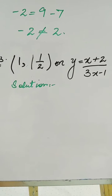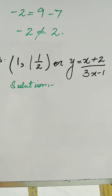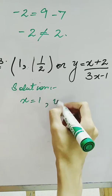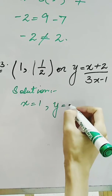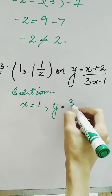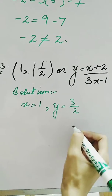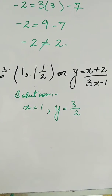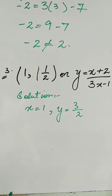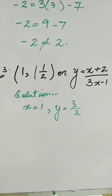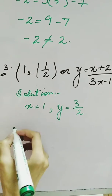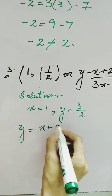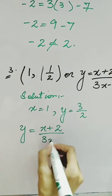We have another question in which the coordinates are given as x = 1 and y = 1½, which is equal to 3/2. We have to check whether these points satisfy the given equation or not — meaning whether they lie on the given line. We put these values into the given equation which is y = (x + 2) / (3x - 1).